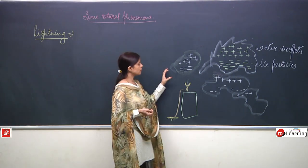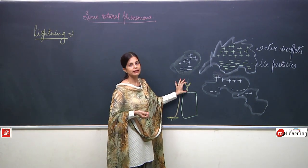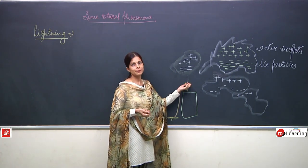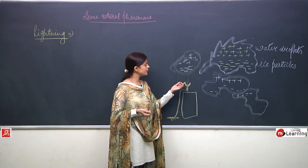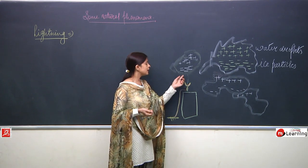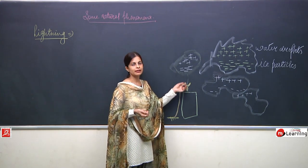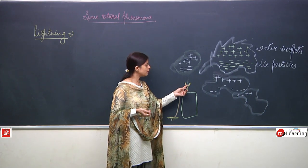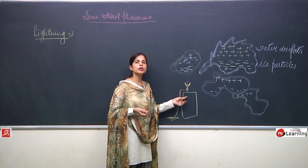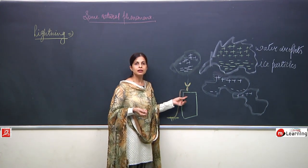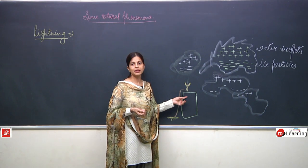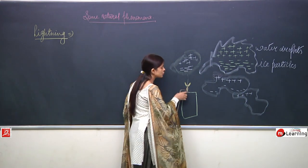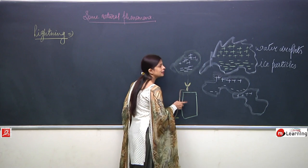The lightning conductor has sharp edges and has the capacity to attract the charge. But it is not going to be harmful for the building because the charge will not get a chance to pass inside the building.